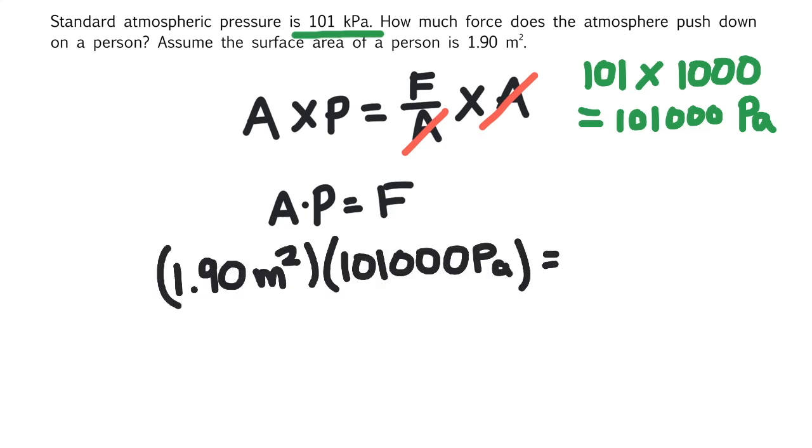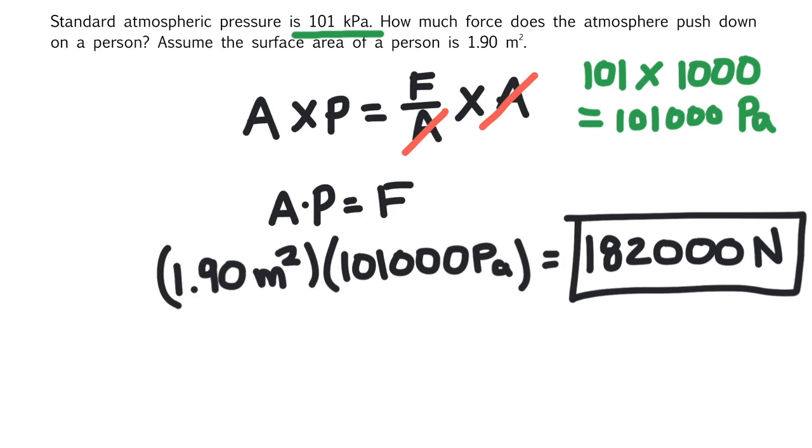We have 101,000 Pascals. Now we can multiply that by the area, 1.90 meters squared, and we get an answer of 182,000 Newtons. That's the force exerted on that person.